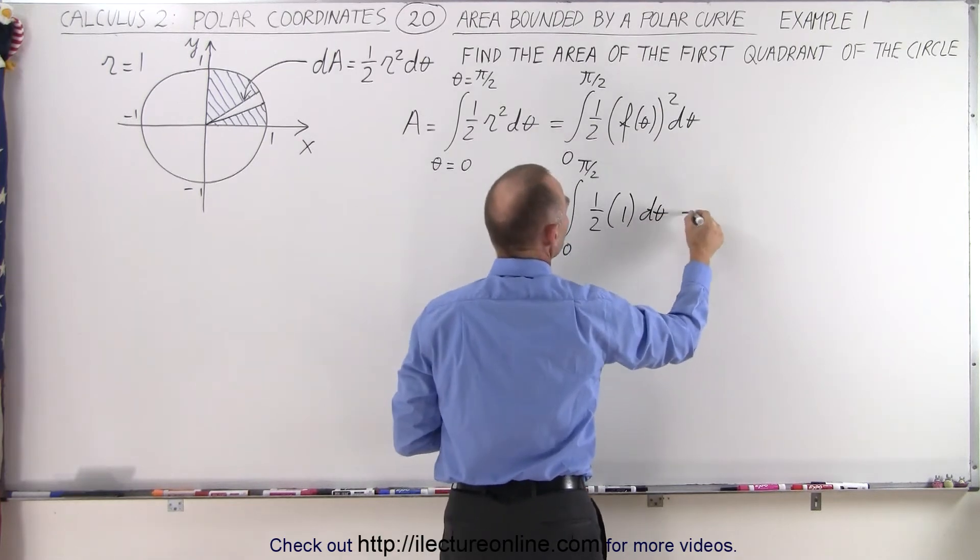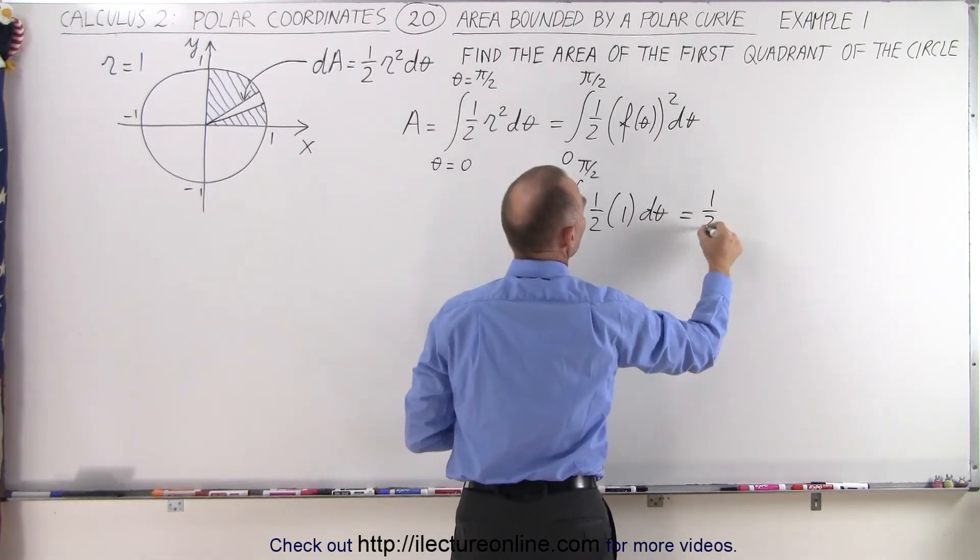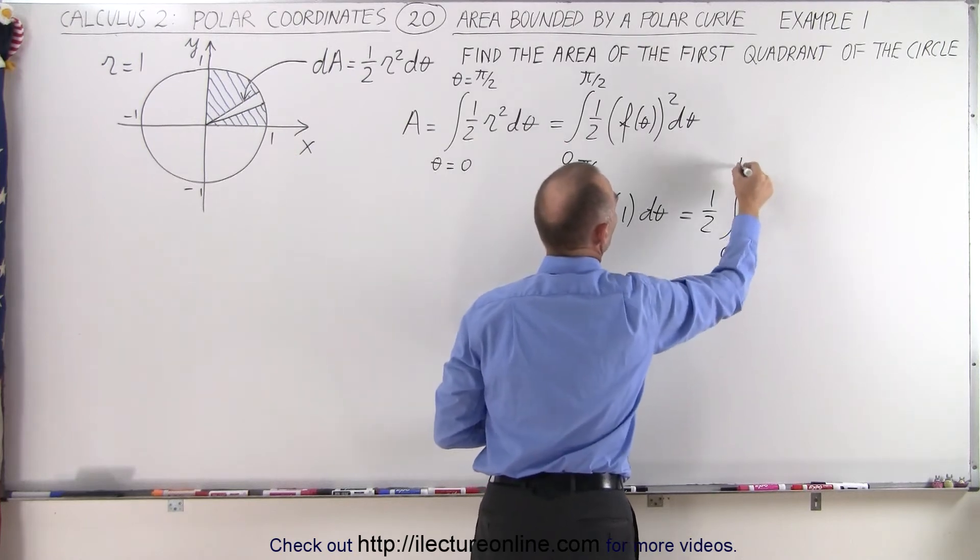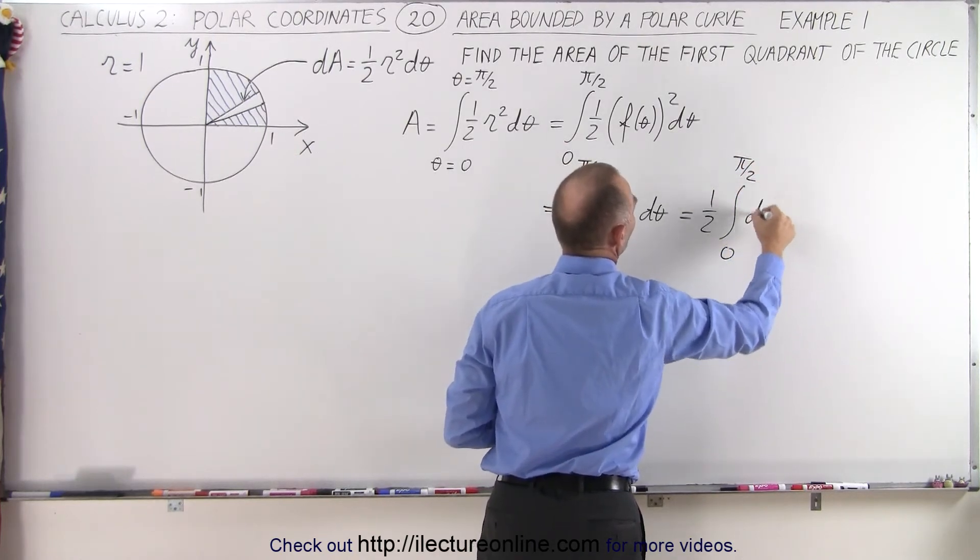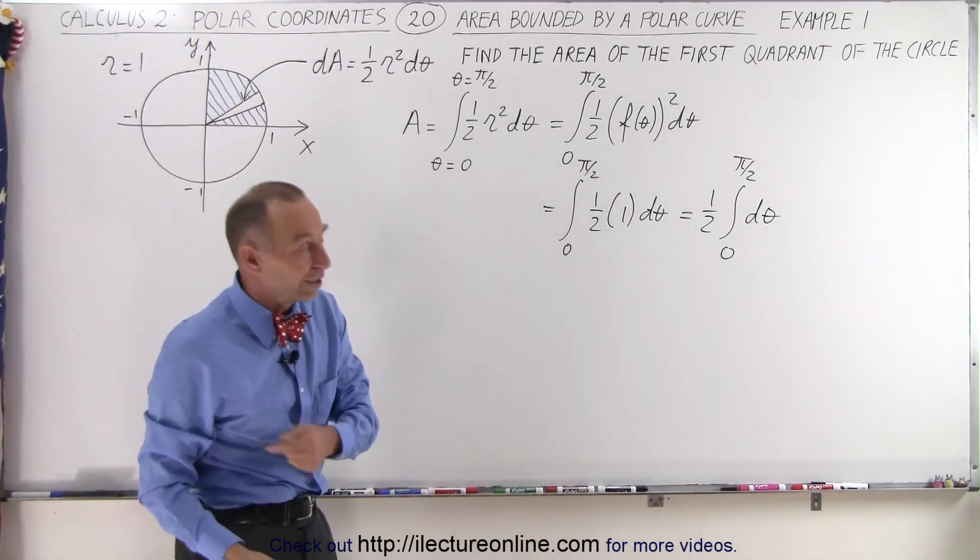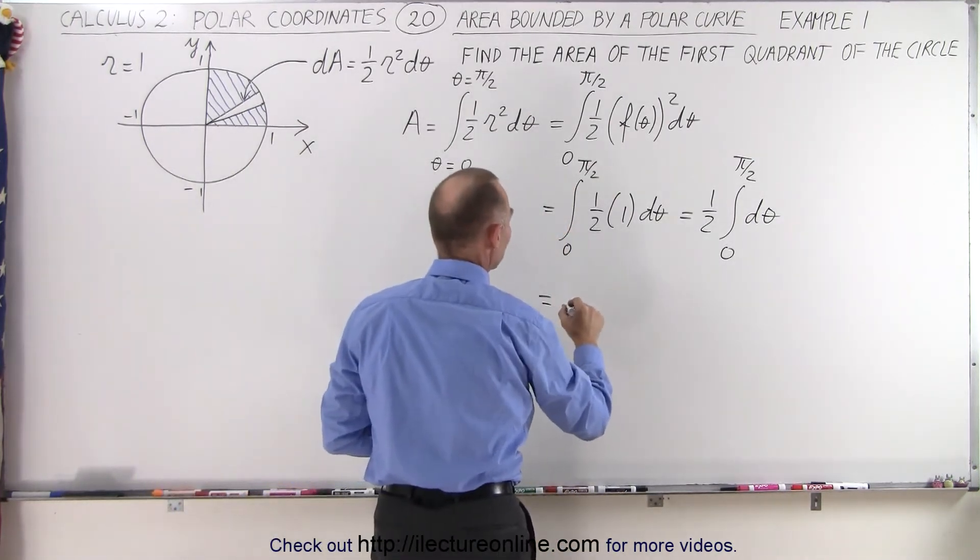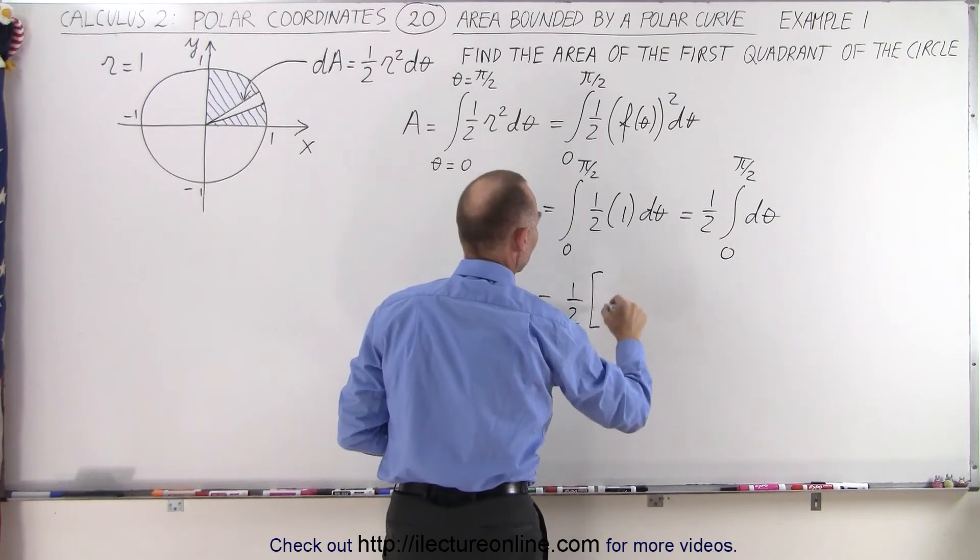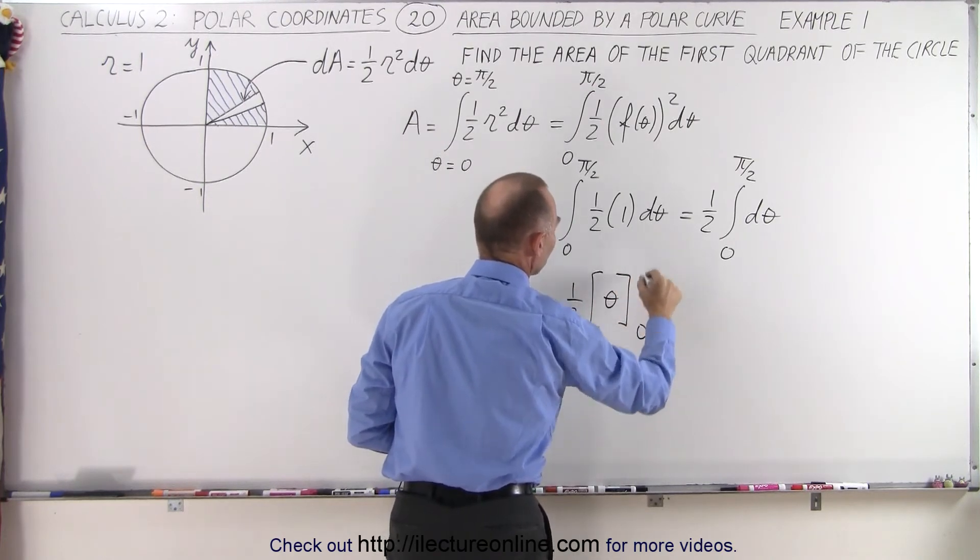That can be written as one-half times the integral from 0 to π/2 of dθ. That's a really easy integral, so this becomes equal to one-half times θ evaluated from 0 to π/2.